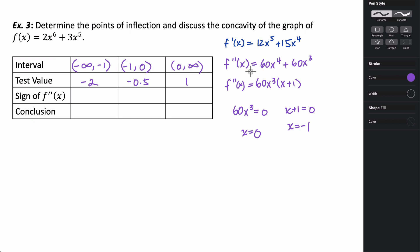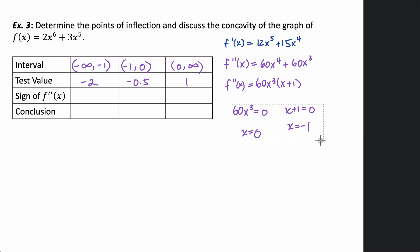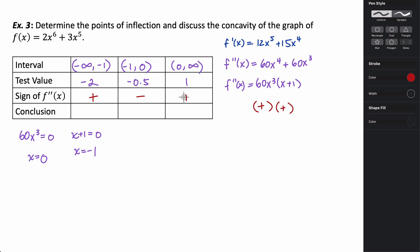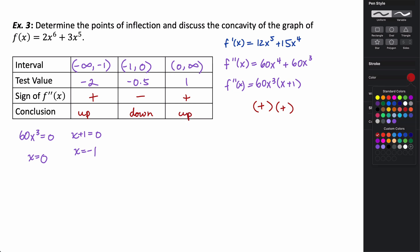Plugging into the second derivative: at x = −2, a negative cubed stays negative, and negative times negative gives positive. At x = −½, that's negative times (−½ + 1) which is positive, so negative times positive is negative. At x = 1, positive times positive is positive. So the function is concave up on (−∞, −1), concave down on (−1, 0), and concave up on (0, ∞).